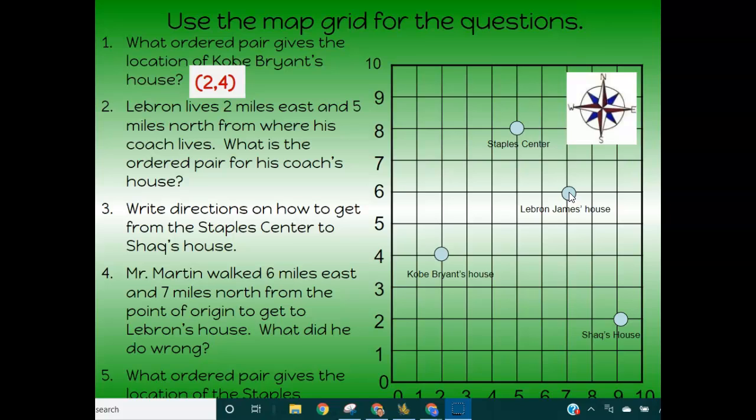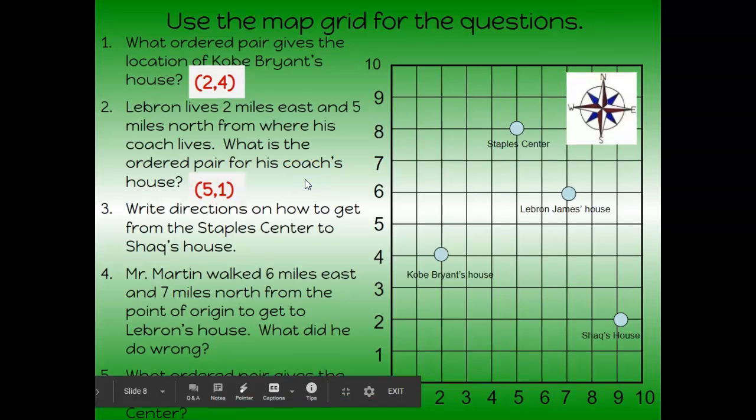So it says two miles east, so that means I have to go two miles west, which takes me here. And then I have to go five, that I am five miles north of where I need to go. So I have to go five miles south. So one, two, three, four, five. So this is where his coach lives and that is five, one. Okay, a little trickier. You have to kind of think about it.